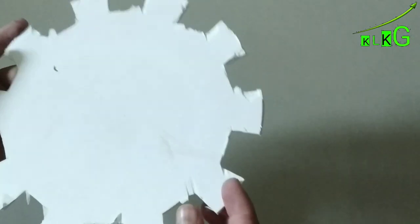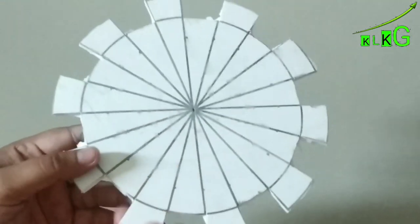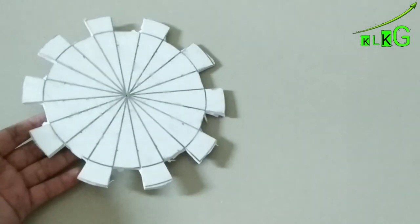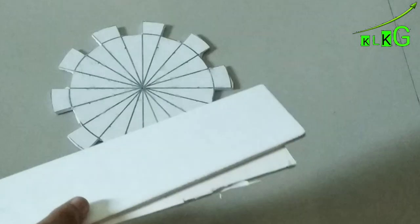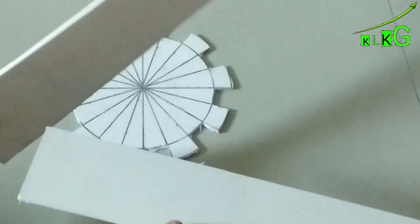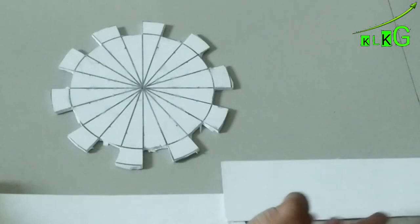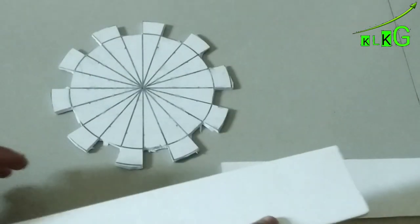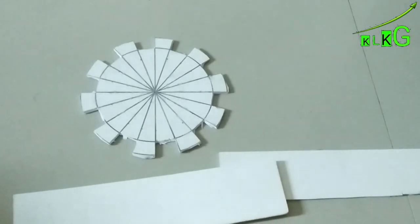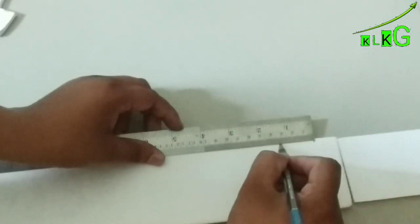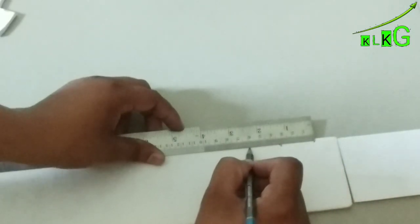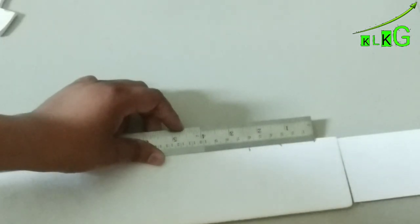Now we need around 50 centimeters long Sun board sheet. I didn't have it, so here I just joined it with cello tape. Also, at every three centimeters you have to put a dot like this.